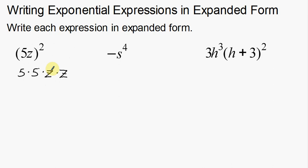A 5 and a 5, a z and a z—that's the quantity 5z squared. So this would be the expanded form: taking away the exponent and expanding everything out, writing all the different numbers.